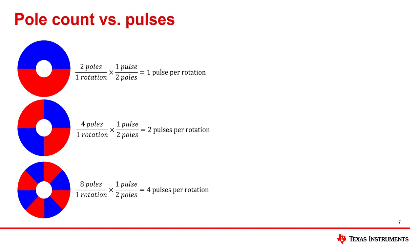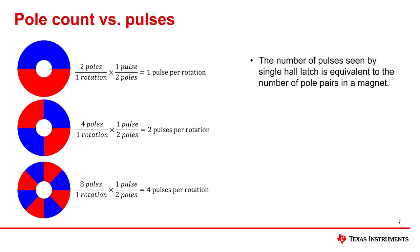As mentioned previously, with more poles there are more transitions. The amount of pulses seen is determined by the amount of pole pairs present in our ring magnet. If we use four poles — two north and two south — then we will see two output transitions throughout the impeller's 360 degree rotation.